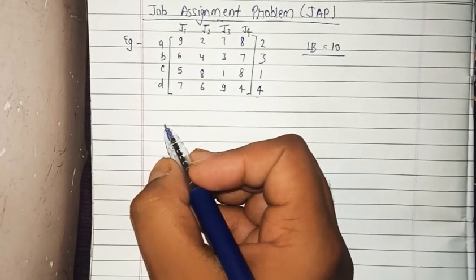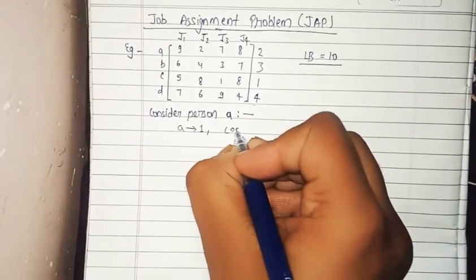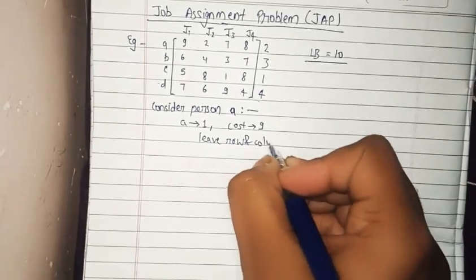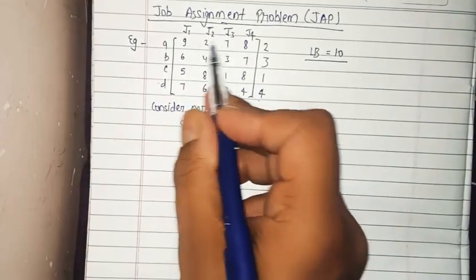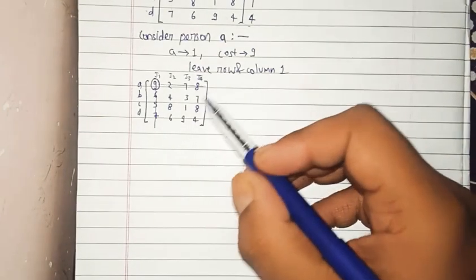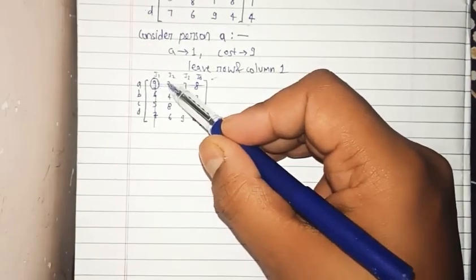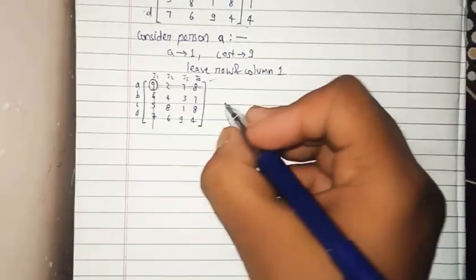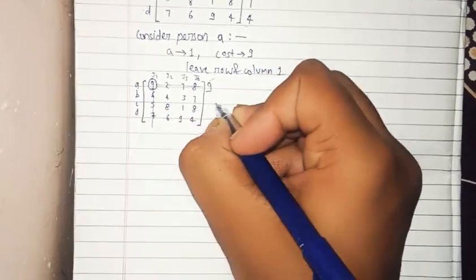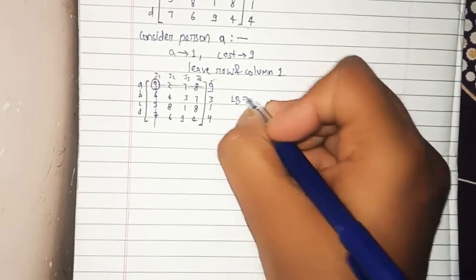We start by considering person A assigned to job 1, where the cost is 9. According to the rule, we leave — that is, remove — the corresponding row and column, circling the cost of 9. Then we find the minimum cost of the remaining submatrix: 3, 1, and 4, giving an addition of 17.